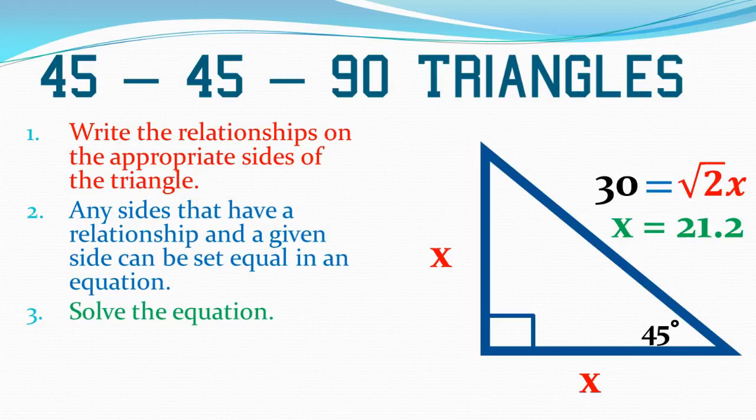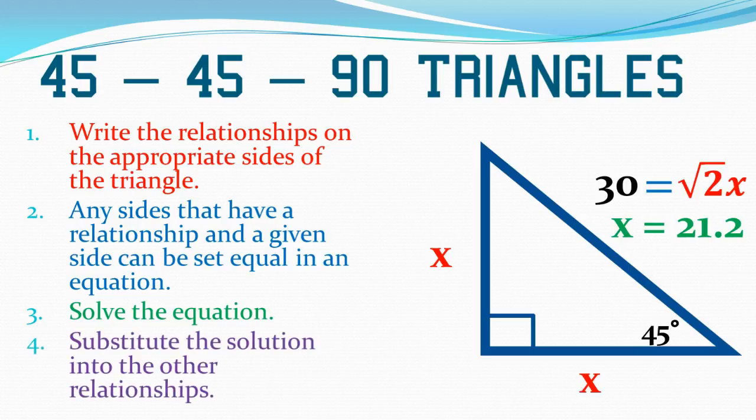Some problems simply ask you to solve for x. If that was the case, we'd be done. If not, they may ask you to plug in that value to solve for the other sides. We already know what x is, and we already were given the hypotenuse. We just have to find those two legs. They each represent x, so I don't need to do anything. I just need to plug in my x. So that's 21.2, and that's 21.2.